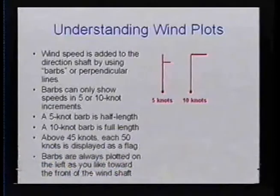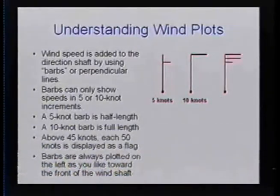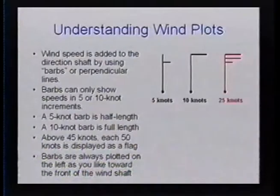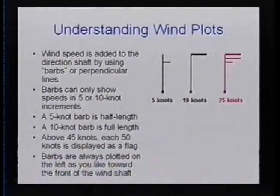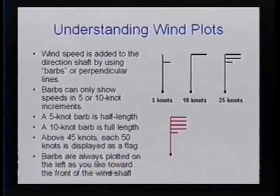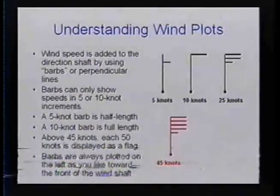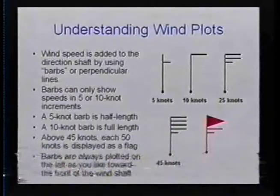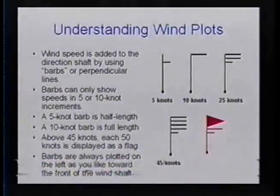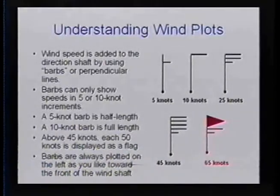For higher speeds above 45 knots, each 50 knots is displayed in a different type of symbol called a flag. Barbs are always pointed on the left as you look toward the front of the wind shaft. Here's an example: 5 knots for the very short barb, 10 knots for one full barb. Two long barbs and one short barb—you can talk among yourselves to figure it out—the answer is 25 knots. Another one with lots of barbs: the answer is 45 knots. And finally, one with a flag, a long barb, and a short barb—the answer is 65 knots.